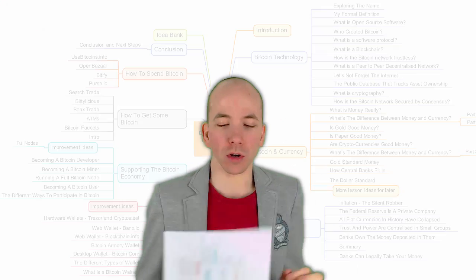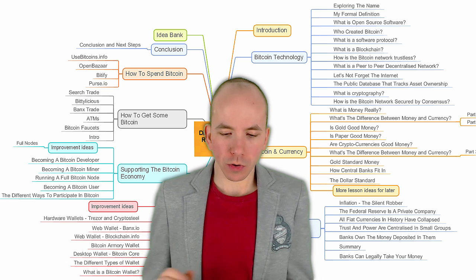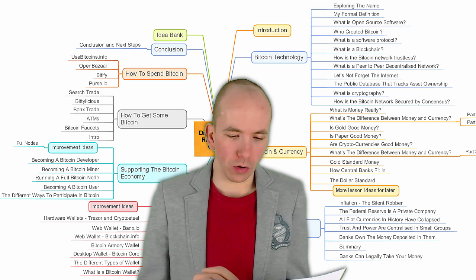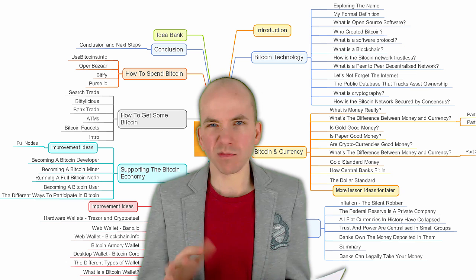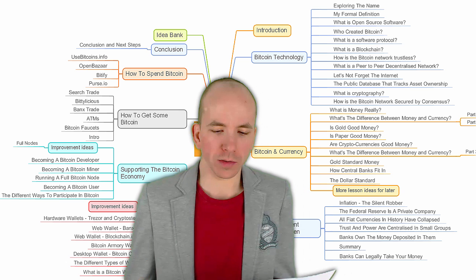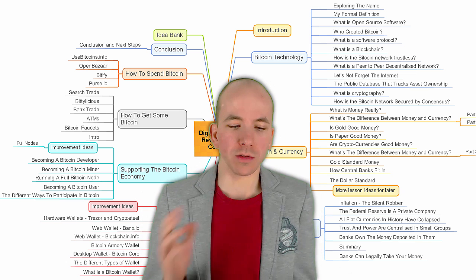Hi there and welcome to the Digital Money Revolution program. I'm going to be your host for this program — my name is Chris Coney, and I'm going to tell you my name every time we go to a new lesson so you won't forget it. This is just an introduction to give you an overview of the course. What I've got here is a lovely mind map of everything we're going to go through, broken down into nine modules — the first one is the introduction and the last one is a conclusion.